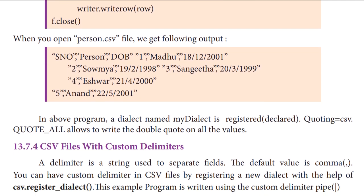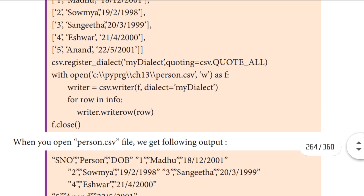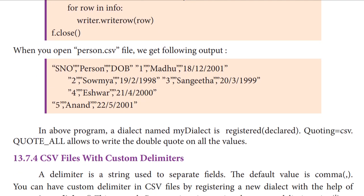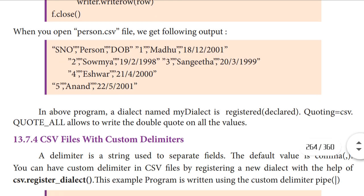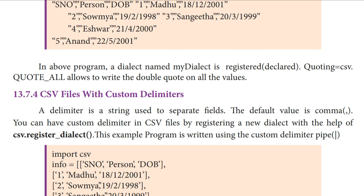When we execute this program, the output looks like this. If you see each data, all the values are mentioned within double quotation marks. With the help of csv.registerDialect, we registered a new dialect. The quoting equal to csv.QUOTE_ALL allows writing double quotes on all the values in the CSV file.